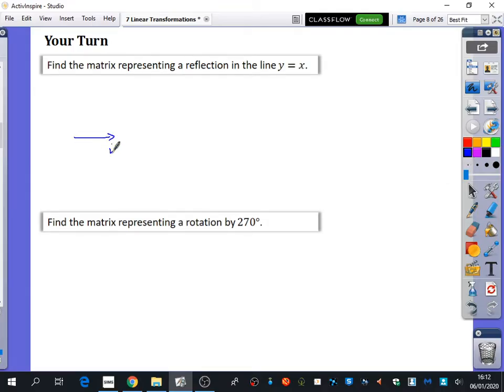So you had i was like this, and j was like this, and it was being reflected in this line. So what effectively happens to these? They switch places, right? So you end up that i is over here, and j is over here.